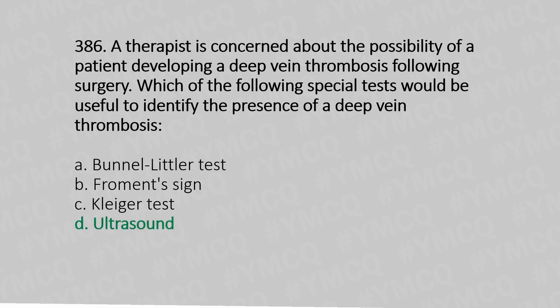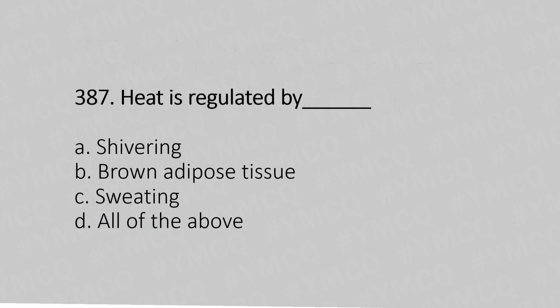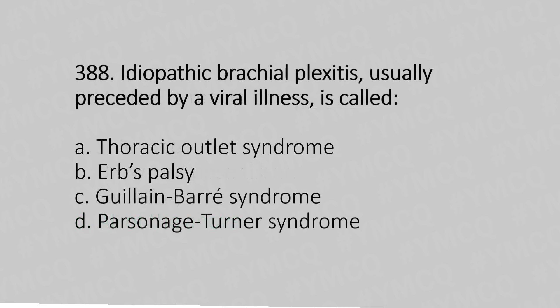Question 387: Heat is regulated by which of the following? Option A: shivering. Option B: brown adipose tissue. Option C: sweating. Option D: all of the above. The answer is Option D: all of the above.